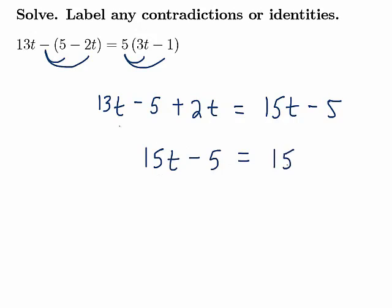And notice on the right-hand side, we also have a 15t minus 5. So we have the same thing on both sides of the equation. So this is what we would consider an identity, and the solution set to this equation would be all real numbers.